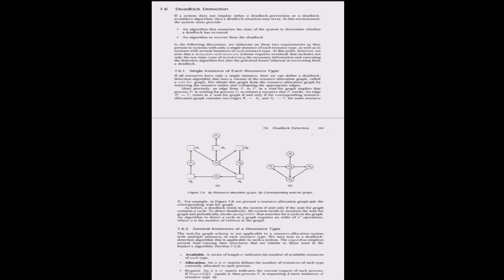To detect deadlock, the system must maintain the wait-for graph and periodically invoke an algorithm that searches for a cycle in the graph. Various algorithms for cycle detection exist, such as depth-first search. The cycle detection algorithm requires O(n²) operations where n is the number of vertices in the wait-for graph. The deadlock detection algorithm should be invoked at regular intervals, with frequency depending on system requirements and likelihood of deadlocks. Deadlock detection is a reactive approach; the system must be prepared to handle detected deadlocks through recovery mechanisms, and prevention/avoidance should still be considered.